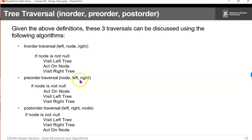For a preorder node, it's the same, but different ordering. Act on the node, visit the left, then visit the right. And for postorder, we visit the left tree, the right tree, and then we act on the node.